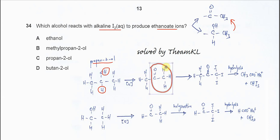If you further react with alkaline iodine, it will undergo halogenation. All the hydrogens on the methyl group will be substituted by iodine, and because it undergoes halogenation, all of them are substituted by iodine, forming this structure here.